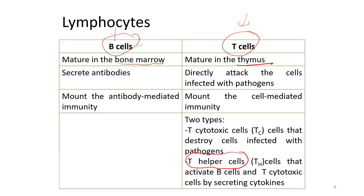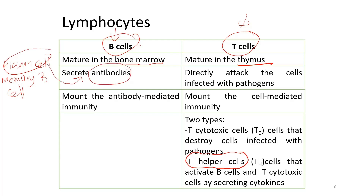After the B cell is activated, it will undergo differentiation and clonal selection into two groups of cells: plasma cells and memory B cells. Plasma cells are the ones that secrete antibodies. The antibodies will bind to the antigen and neutralize them, or they will mark the antigen and call up other leukocytes such as macrophages, which will finally destroy the pathogen.